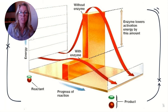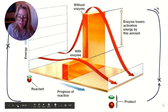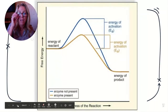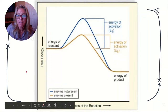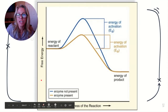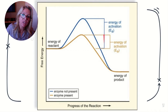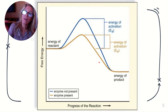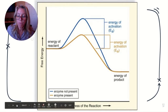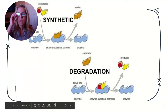Enzymes speed up reactions by lowering the energy of activation. On the diagram, free energy is on the y-axis and progress of the reaction on the x-axis. Notice the blue curve's large activation energy without the enzyme versus the tan curve with the enzyme — the hurdle is smaller, so the reaction is more likely to go forward.